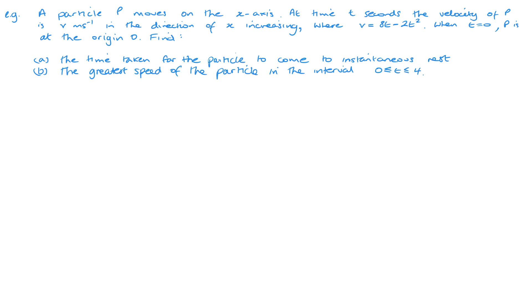So another straightforward question, part of a larger previous exam question. What you'll see here, particle moves along the x-axis time t, velocity of p is v in the direction of x increasing. So in the direction of that positive x, where v is this. So v is 8t minus 2t squared. When t equals 0, p is at the origin. Kind of standard type of setup there.